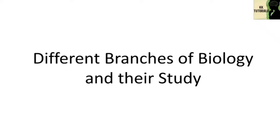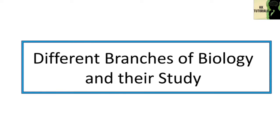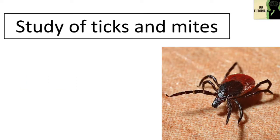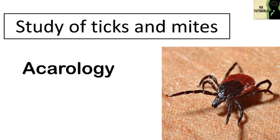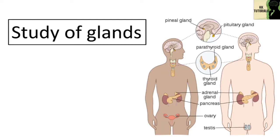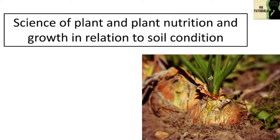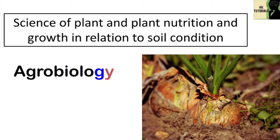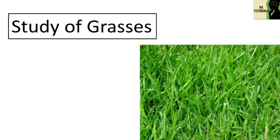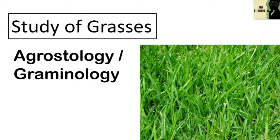Different branches of biology and their study: the study of ticks and mites is called acarology. The study of glands is called adenology. The science of plant nutrition and growth in relation to soil conditions is called agrobiology. The study of grasses is called agrostology or graminology.